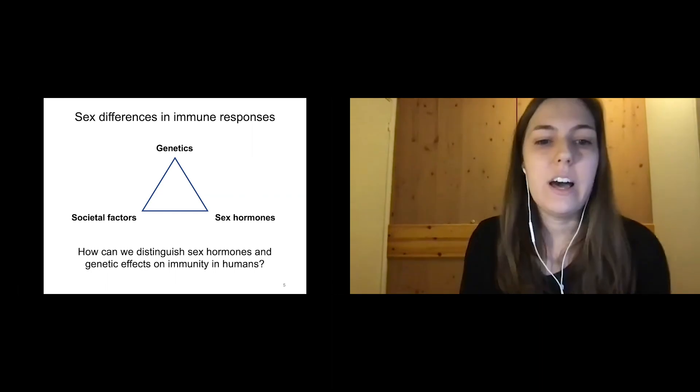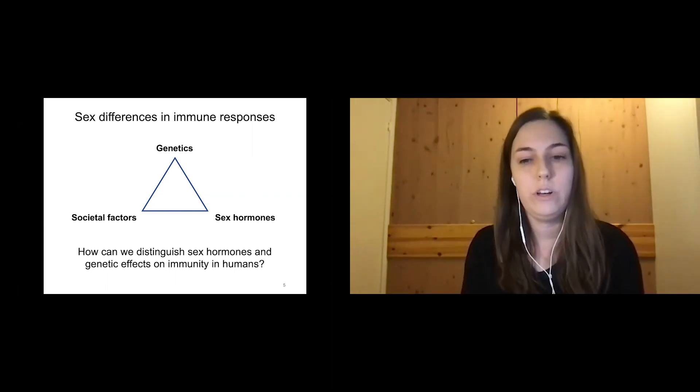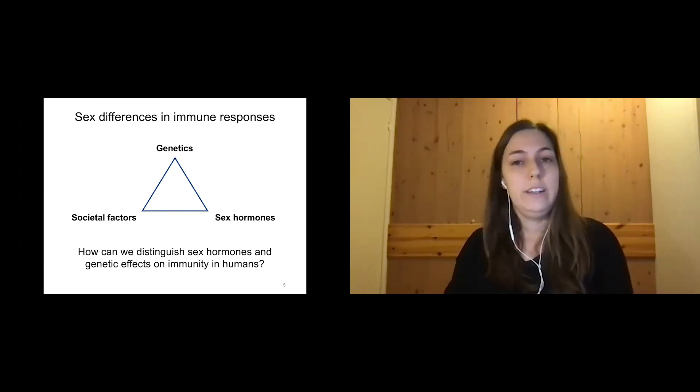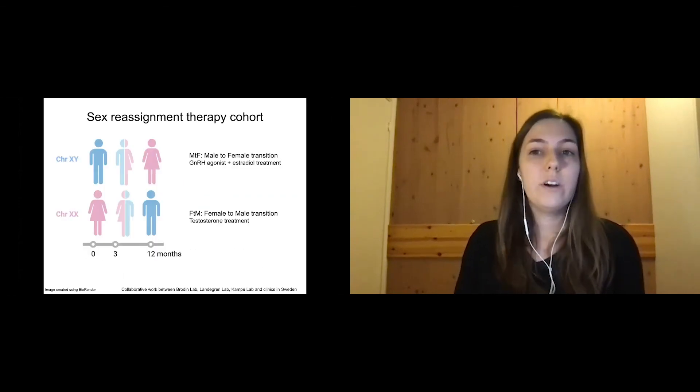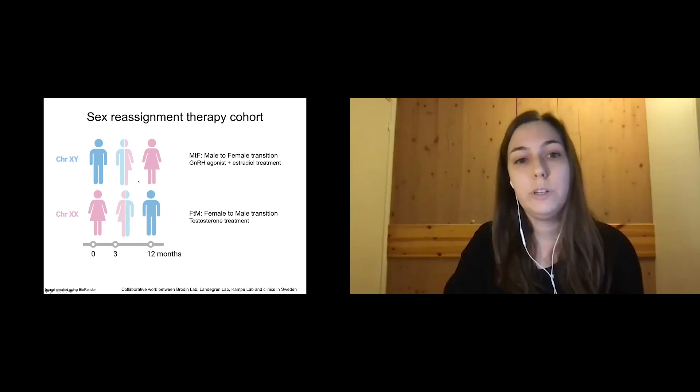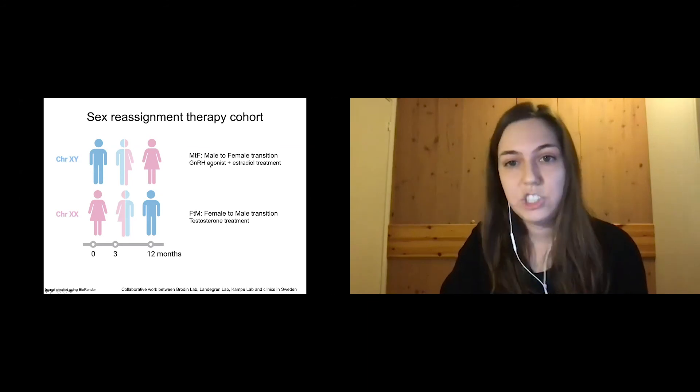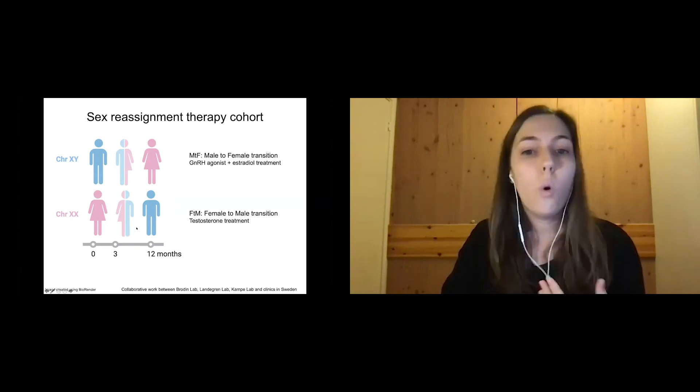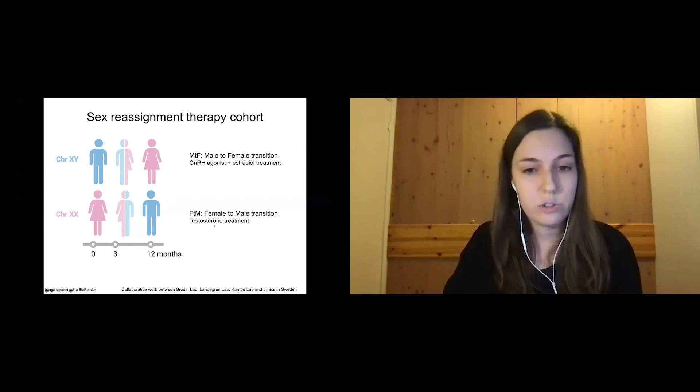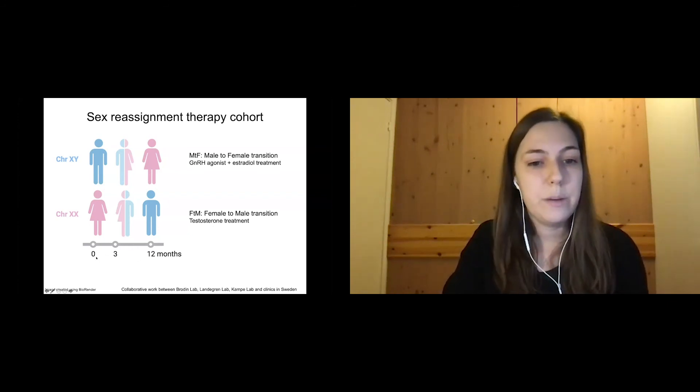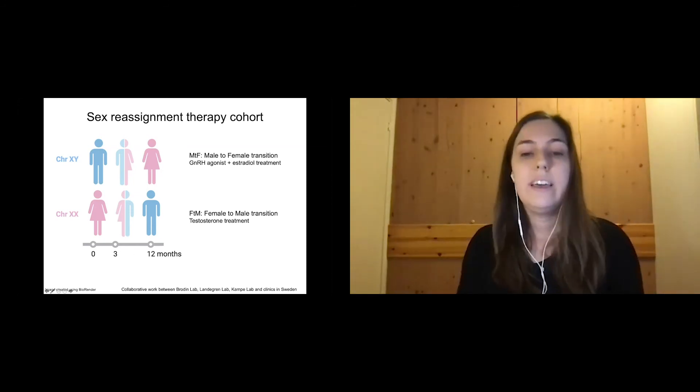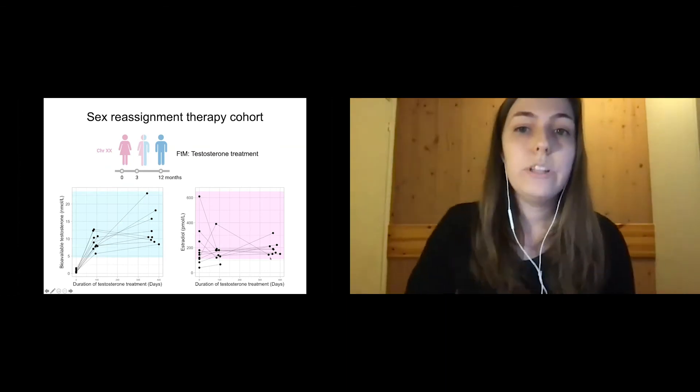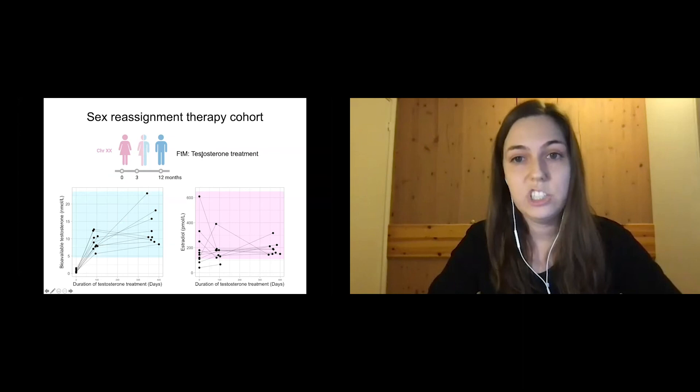The question really becomes, how can we distinguish sex hormones and genetic effects on immunity, especially in humans? This is the question that we're trying to address in this study. We have a cohort of subjects that are undergoing sex reassignment therapy with hormone treatment. These subjects have a fixed genetic background, and they're going to receive hormone treatment to either undergo a male to female transition, utilizing GNRH agonist and estradiol treatment, or they're going to undergo a female to male hormone transition with testosterone. We follow these subjects over time, and we have samples at baseline after three months and after 12 months of treatment, and we can then interrogate how their immune systems are changing as a matter of the sex hormones.